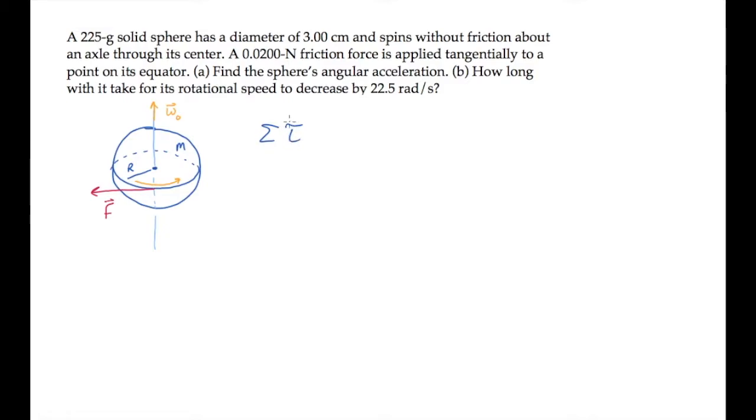We'll do this using the rotational version of Newton's second law. The sum of all the torques equals the moment of inertia times alpha. Solve this for alpha, letting the direction be indicated by the sign of the value.